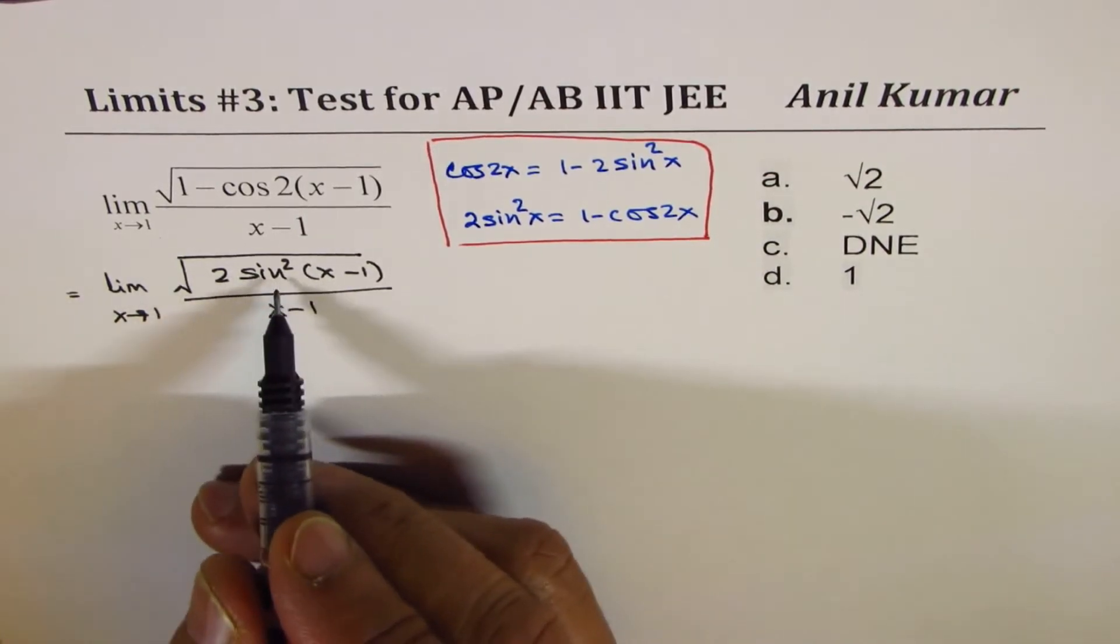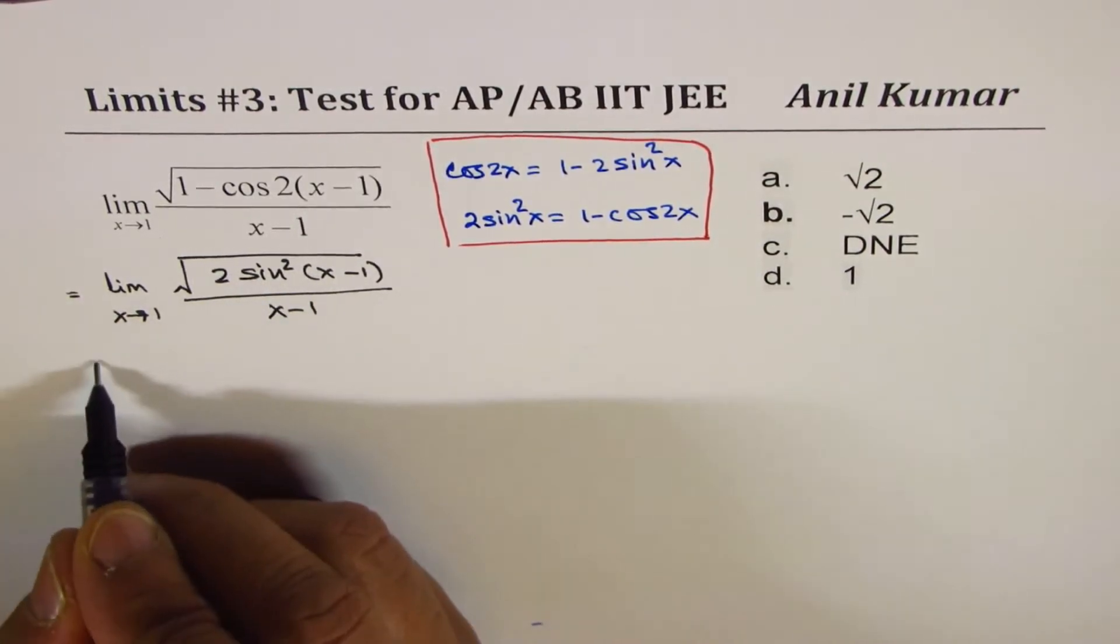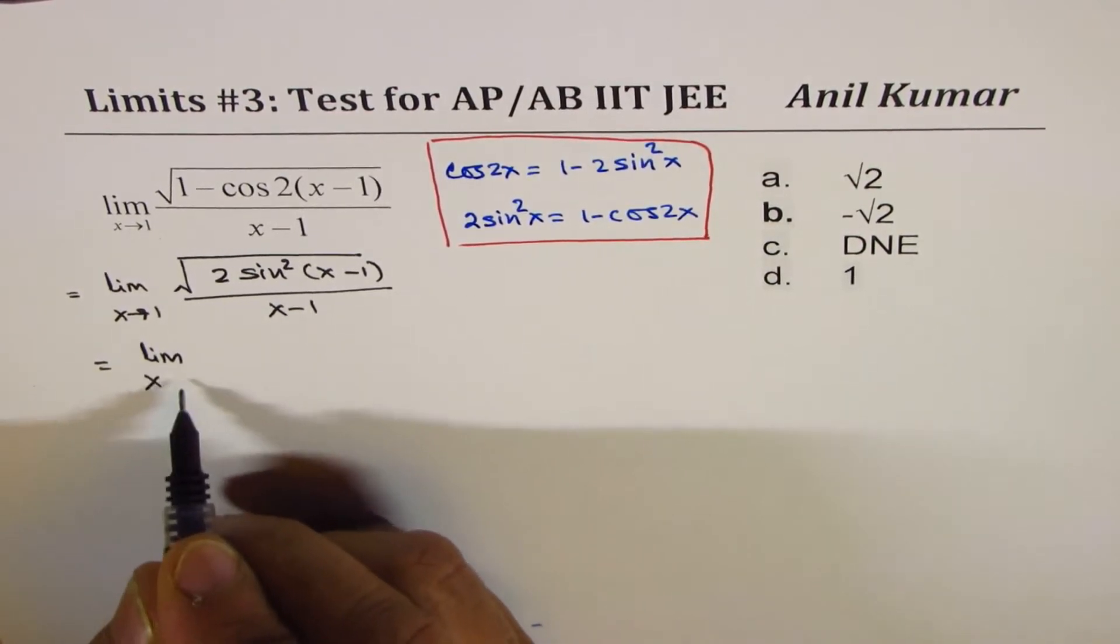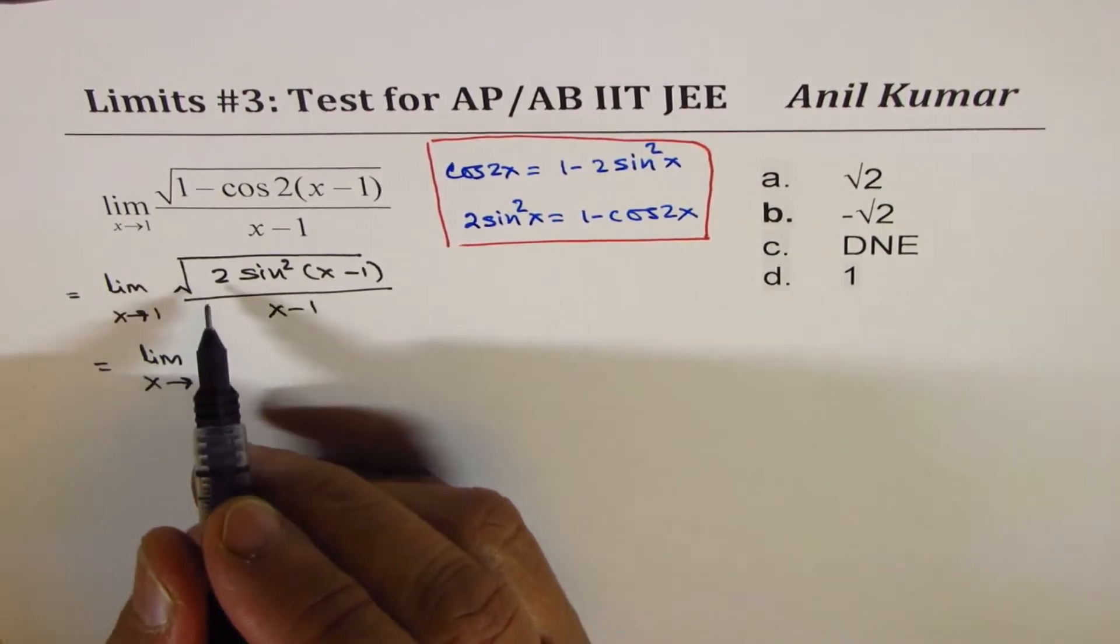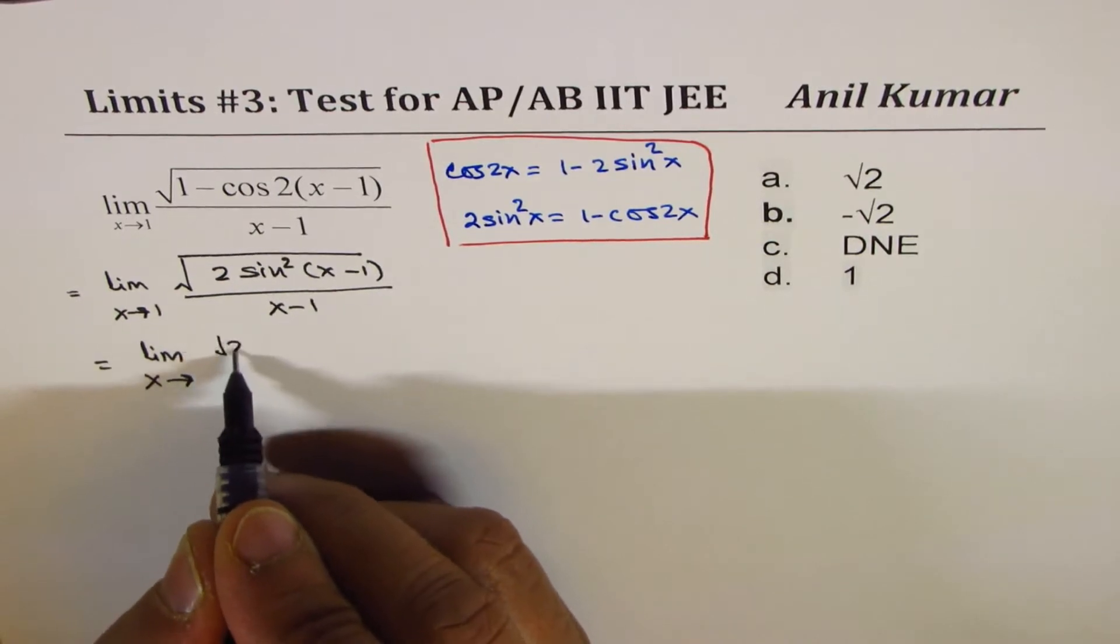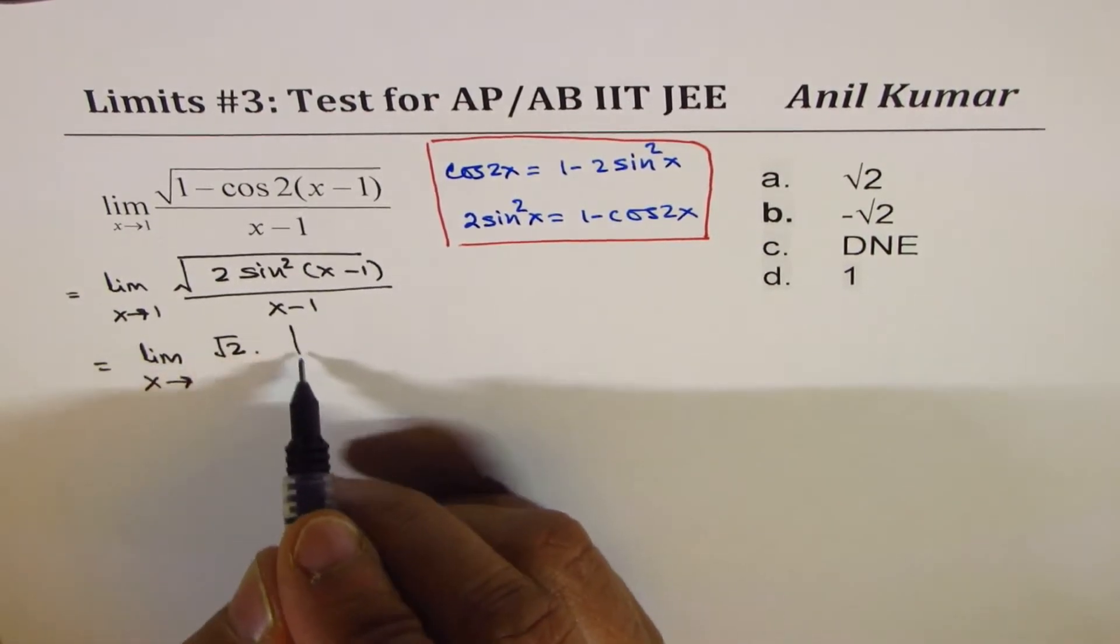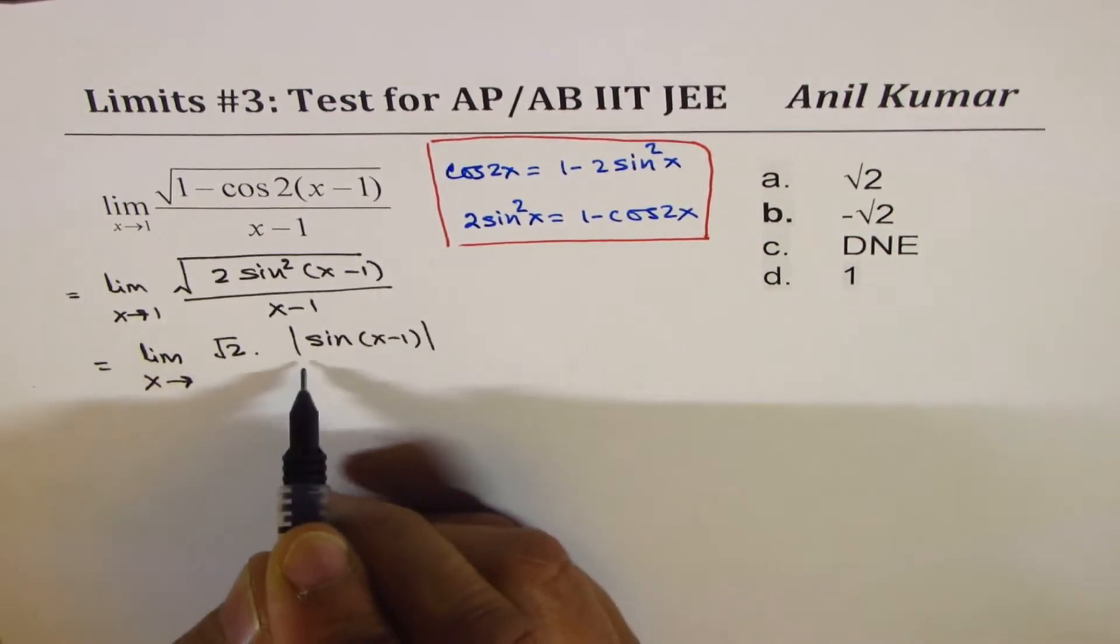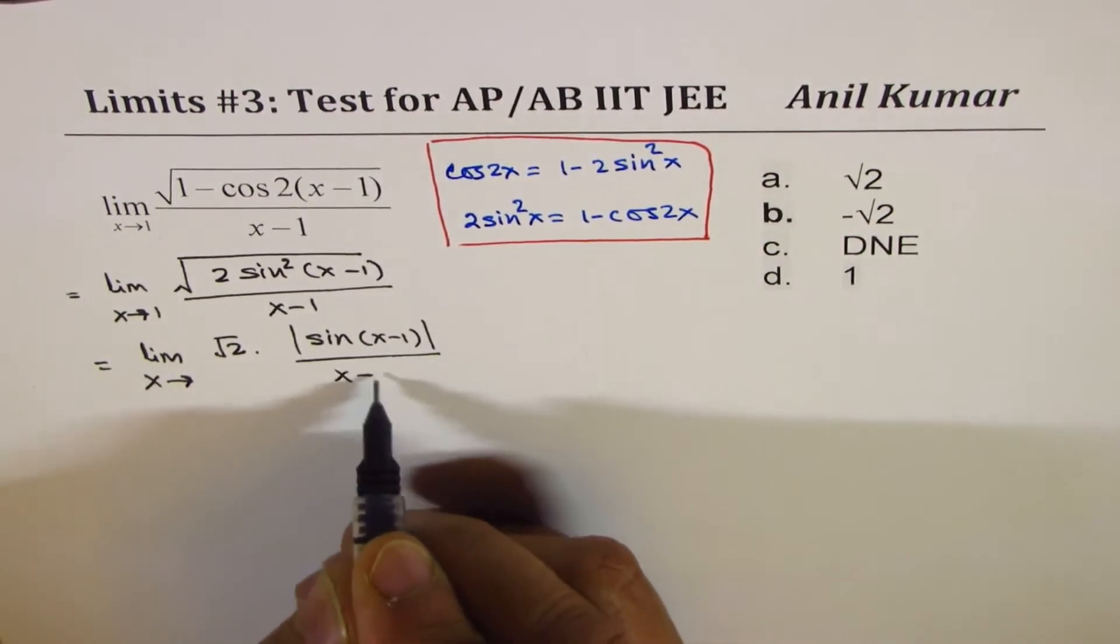Now, if you have to take out this sine square from the square root, what do you get? It is absolute value of sine x. So we have square root of 2 times absolute value of sine (x-1) over x minus 1.